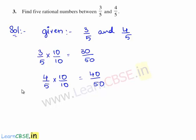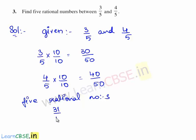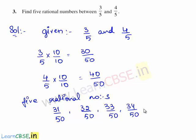Therefore the five rational numbers between 3 by 5 and 4 by 5 are 31 by 50, 32 by 50, 33 by 50, 34 by 50, and 35 by 50.